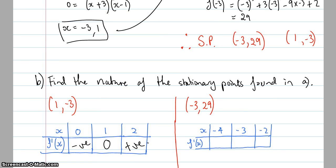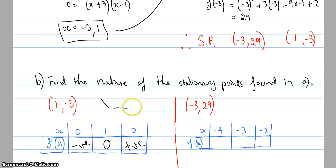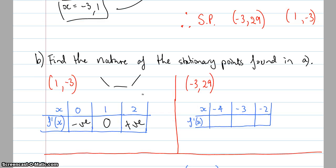So at the stationary point (1, −3), I have a negative gradient before, a zero gradient at, and a positive gradient after. Therefore, this stationary point is a local minimum.